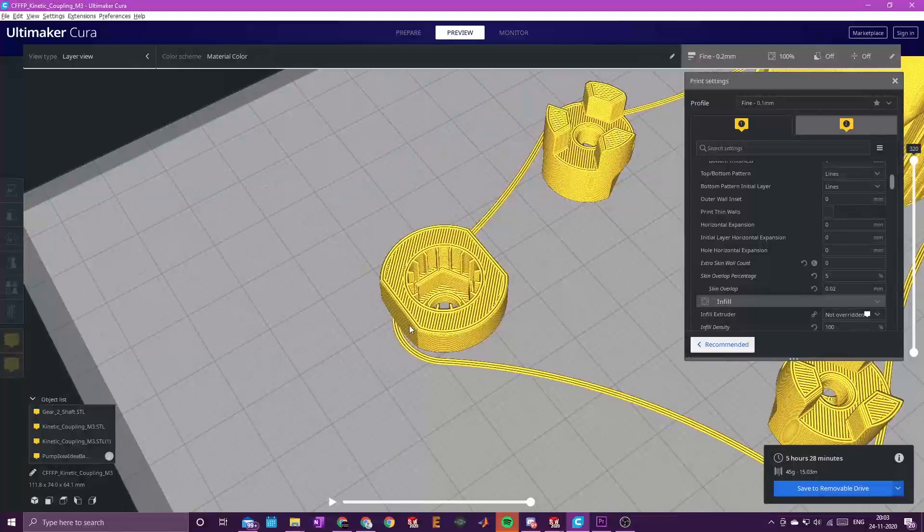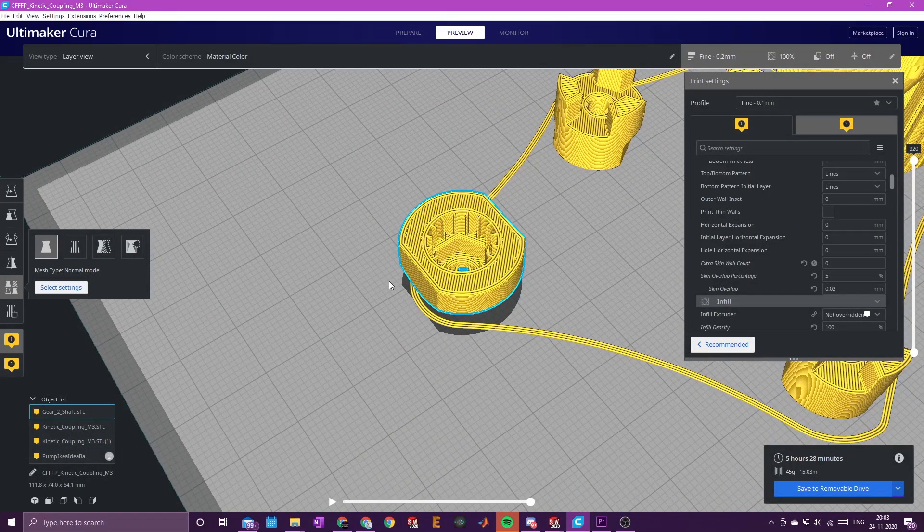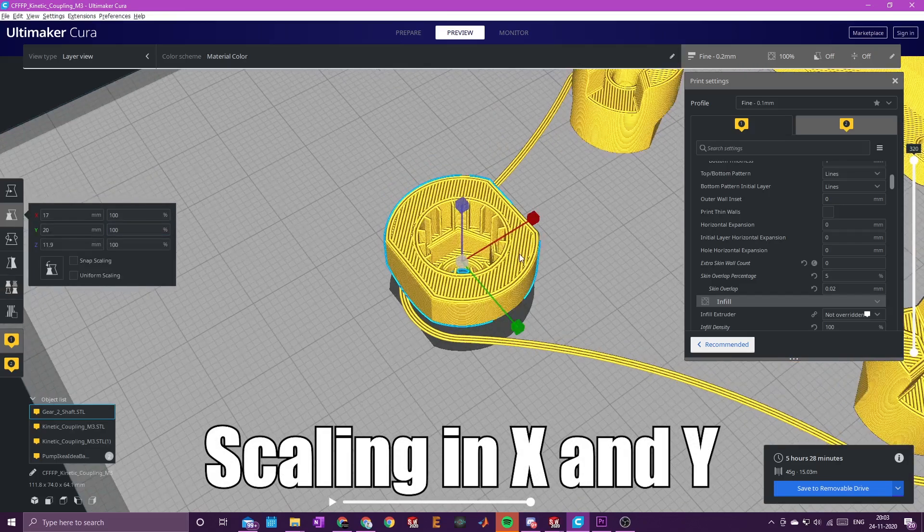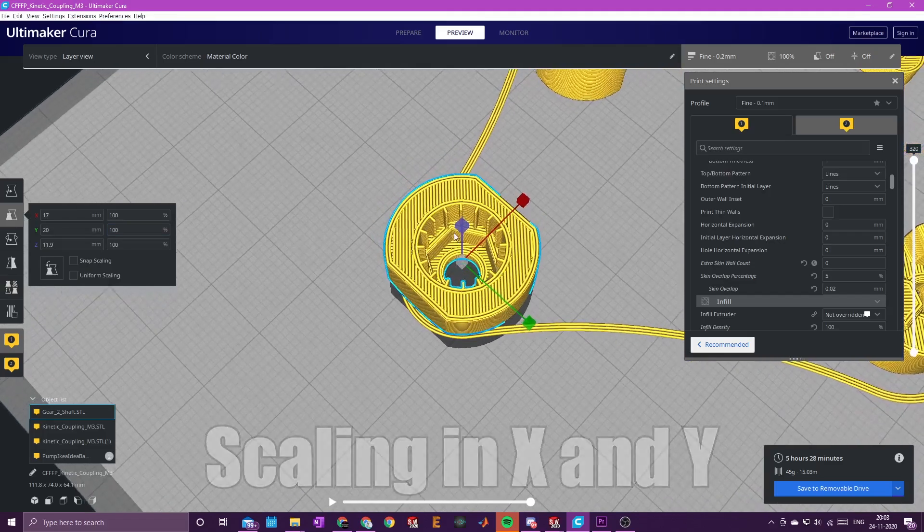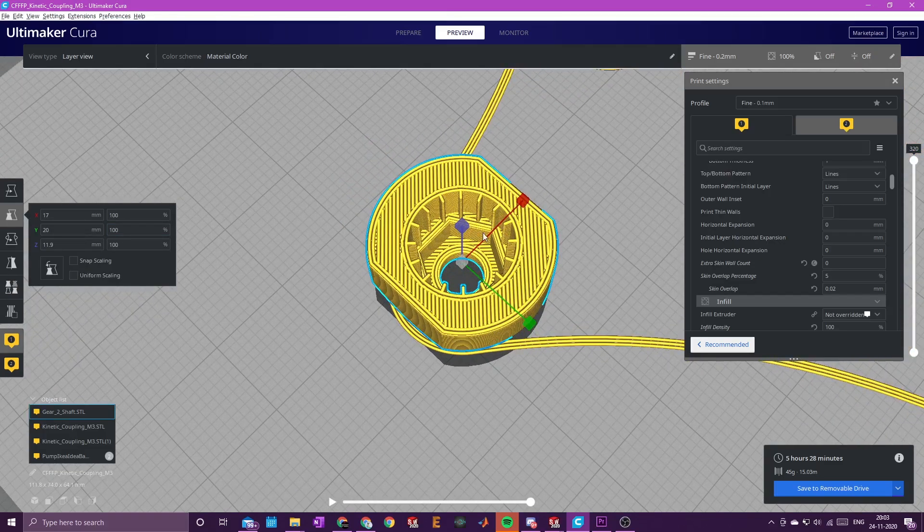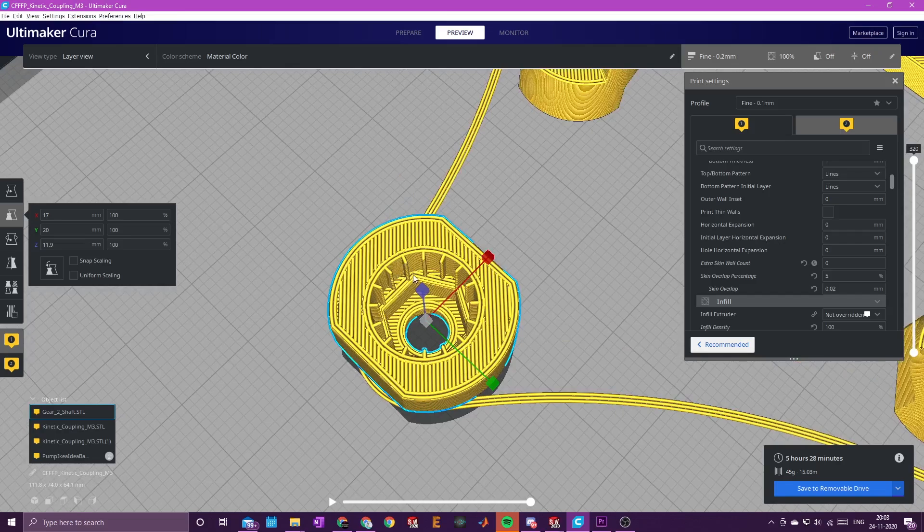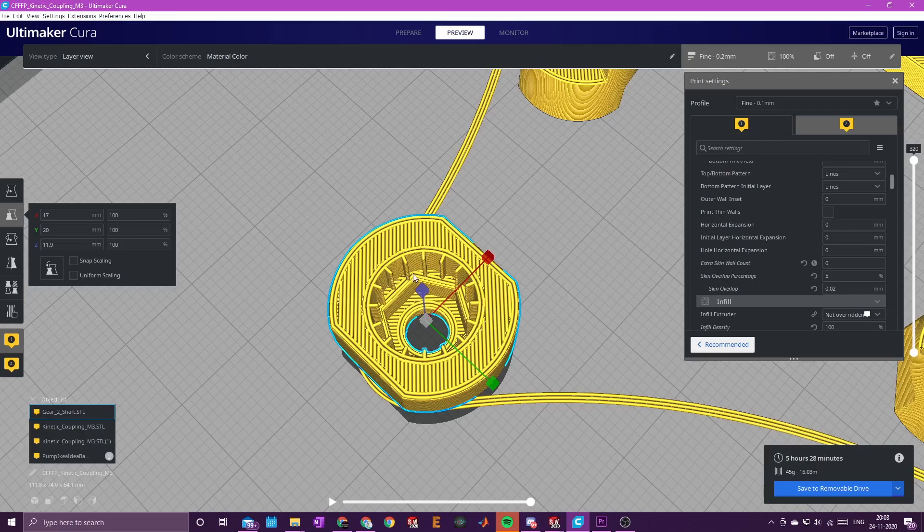For the gear-to-shaft coupling, don't apply horizontal expansion. Just use regular scaling but only in X and Y if it doesn't fit correctly. If it's too snug, make it a little bit larger so these pins will engage with the gear.